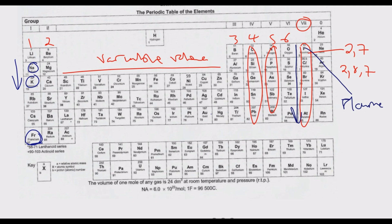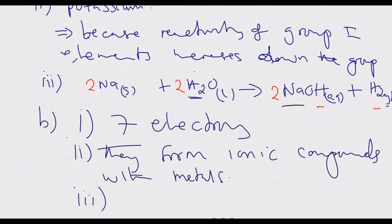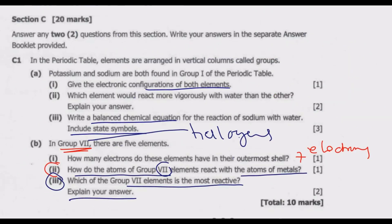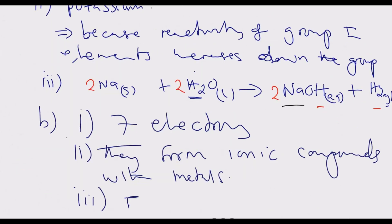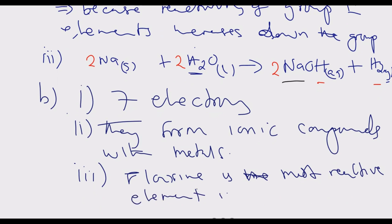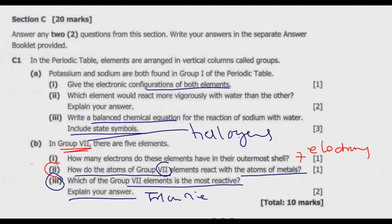Fluorine is the most reactive element in group 7, and it is also the most reactive non-metal element. Moving down the group, activity decreases; moving upward, it increases. So the most reactive group 7 element is fluorine. This is how you answer this question to get the full 10 marks.